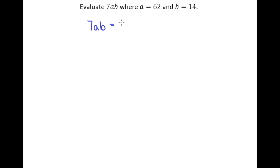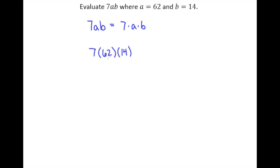So 7ab is the same thing as 7 times a times b. When I plug in these two numbers, 62 and 14, what they're really asking me to do is figure out what 7 times 62 times 14 equals. You could rearrange these — remember, the commutative property of multiplication says you can multiply in any order you want.